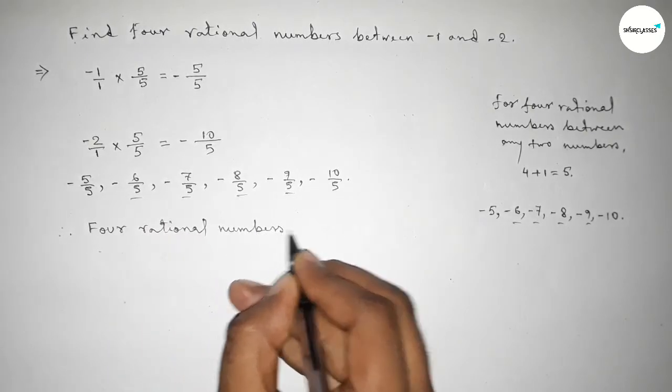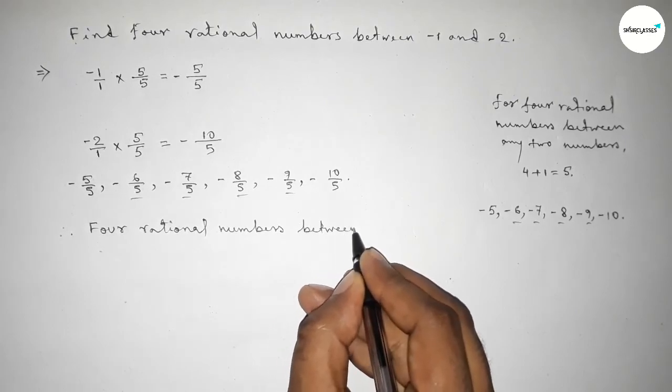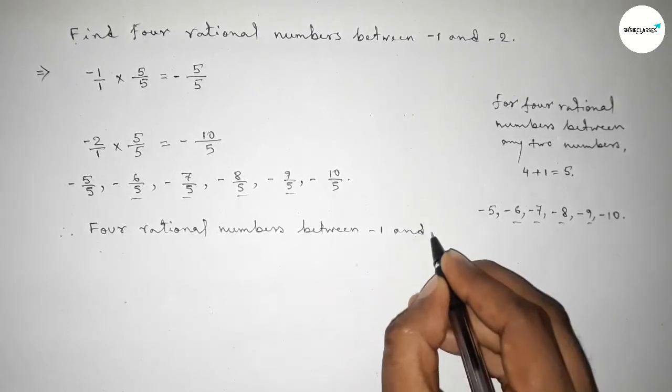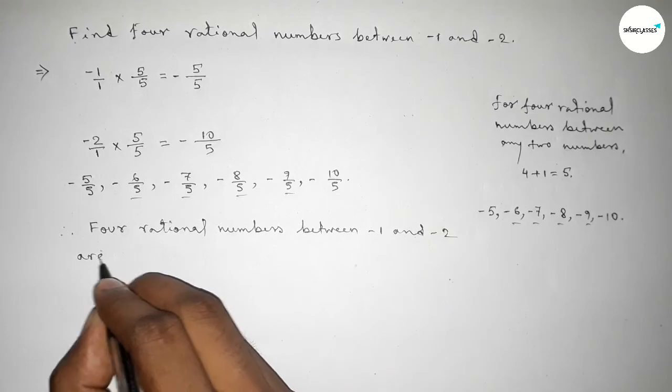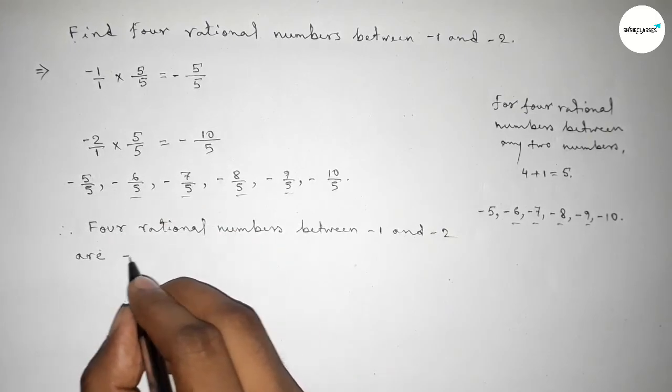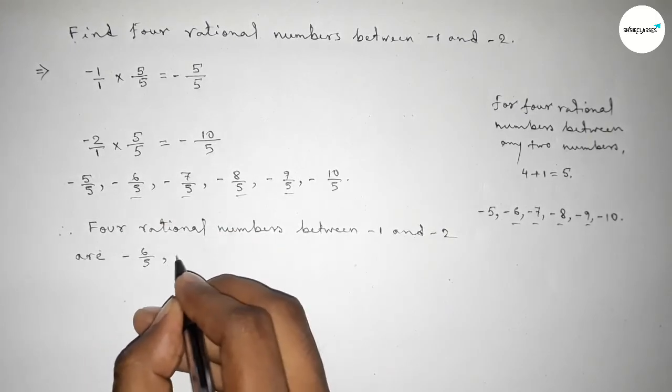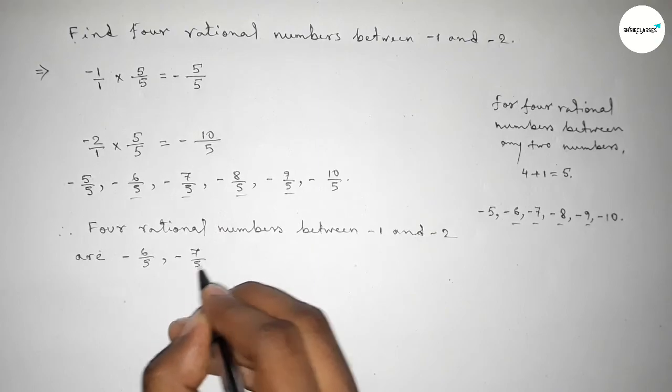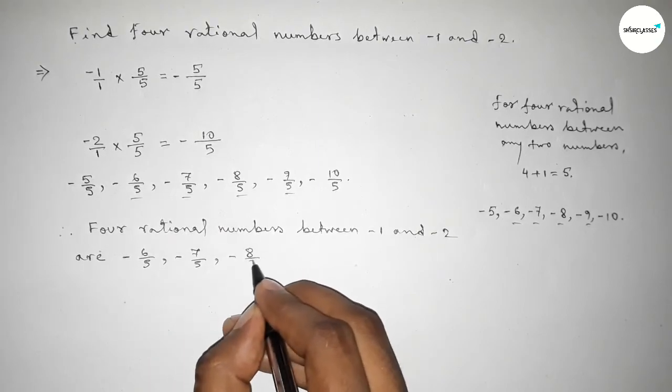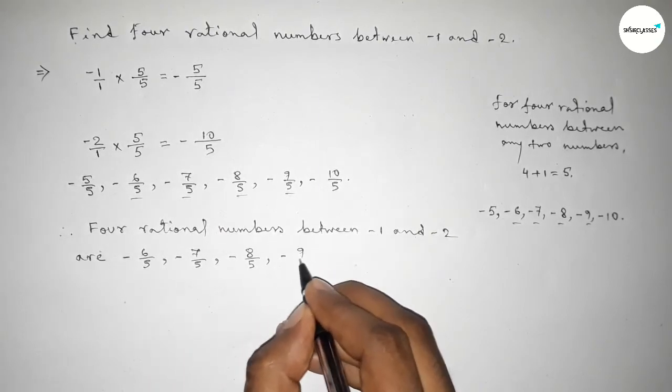Therefore, the four rational numbers between -1 and -2 are -6/5, -7/5, -8/5, and -9/5.